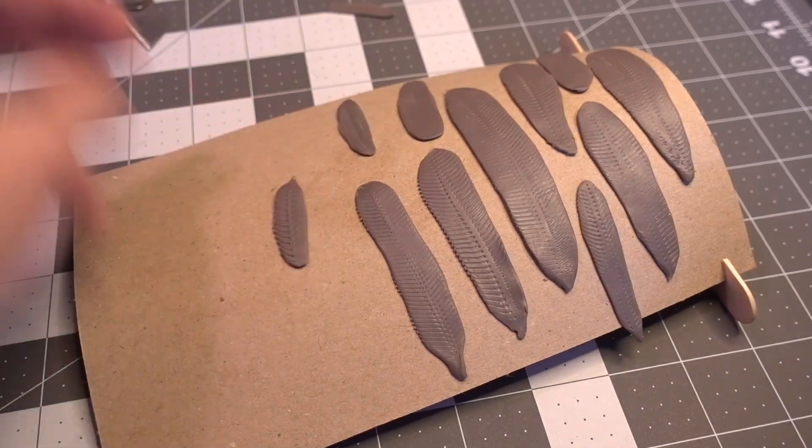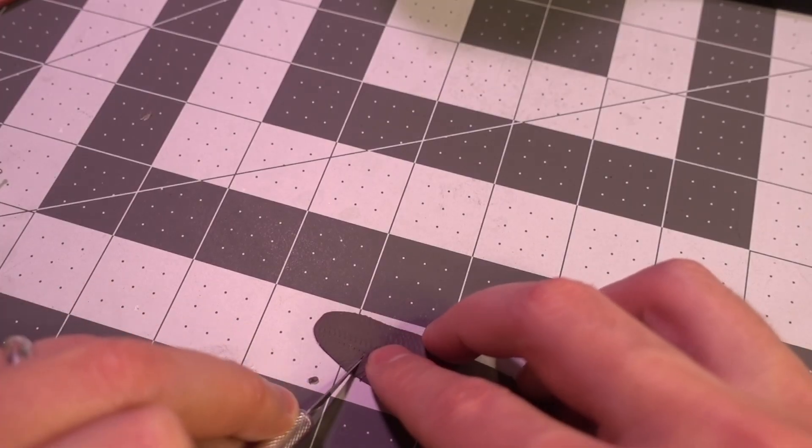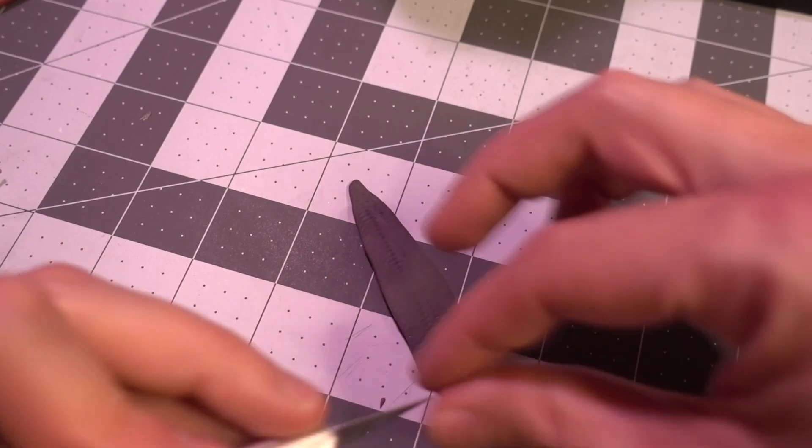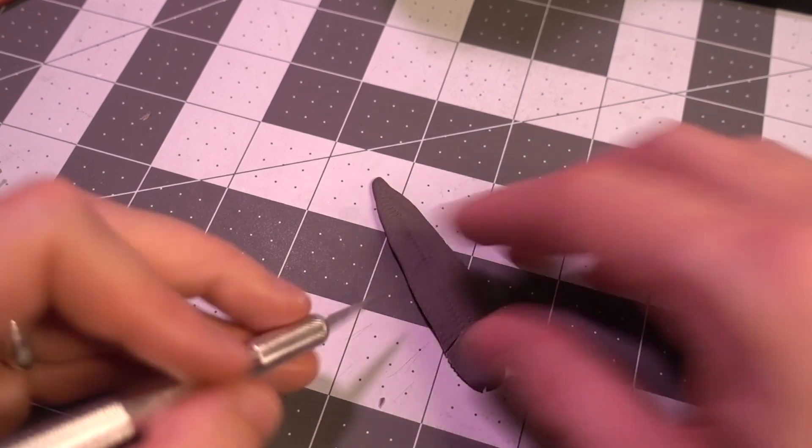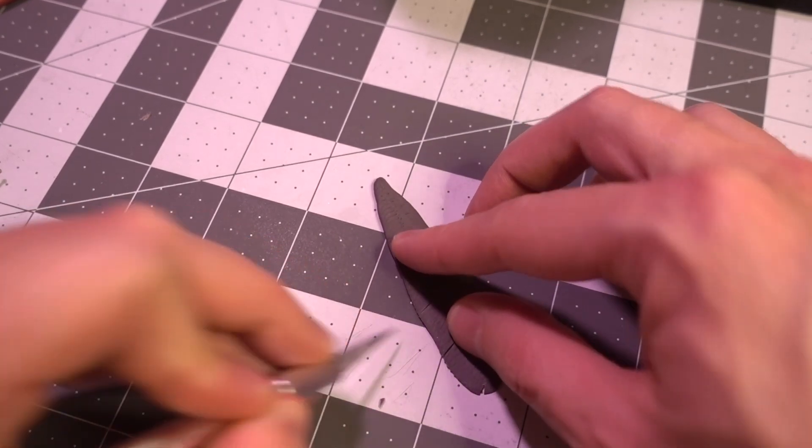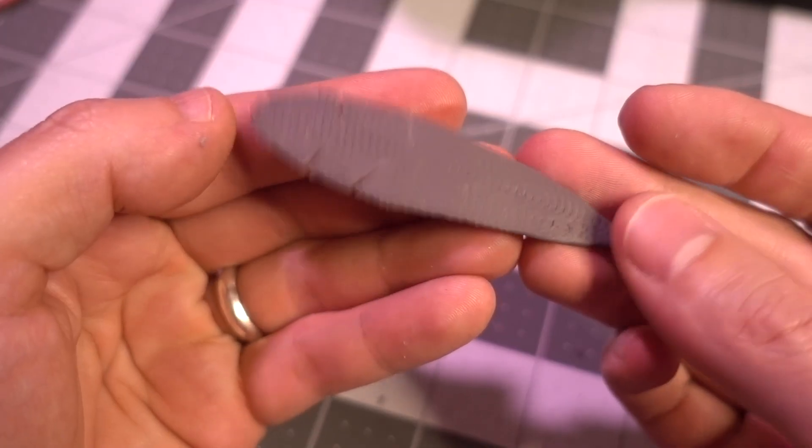While this little detail made sense at the time, I regret it in hindsight. I thought that these little notches in the feathers would make them look more feather-like, which would have worked if the feathers were at 1-1 scale, but since these are giant feathers on the butt of a giant bird, they shouldn't look like this, but I'm not sure why I'm calling attention to it.